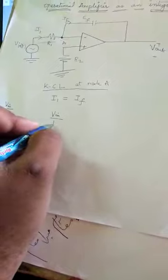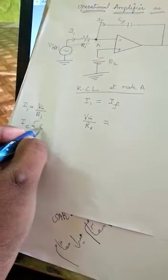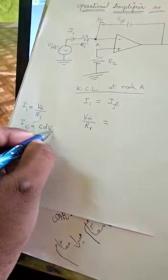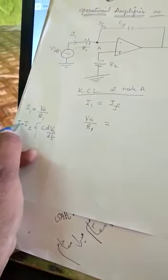The input current can be written using Ohm's law: I1 equals V input by R1. Similarly, the current across the capacitor is IC given by C times dVC by dT. We know IC equals IF because we're connecting a capacitor in feedback. So IF equals C times d by dT of VC.